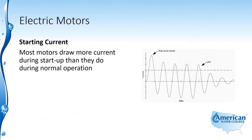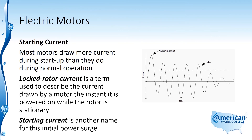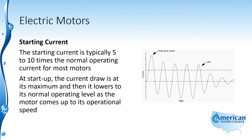Most motors draw more current during startup than during normal operation. Locked rotor current is a term used to describe the current drawn by a motor the instant it is powered on while the rotor is stationary. Starting current is another name for this initial power surge. The starting current is typically five to ten times the normal operating current for most motors. At startup, the current draws at its maximum and then lowers to its normal operating level as the motor comes up to its operational speed.